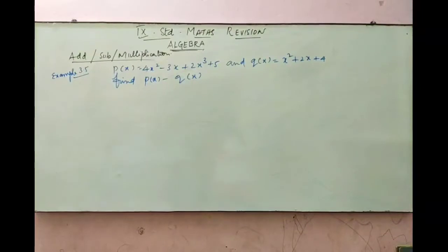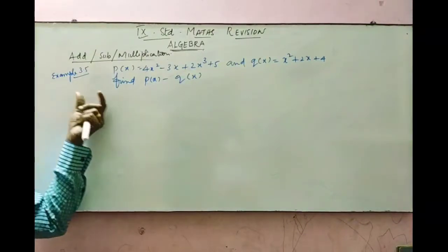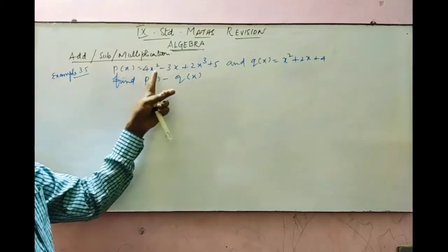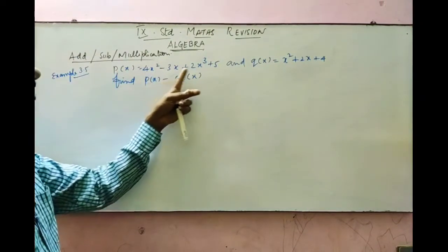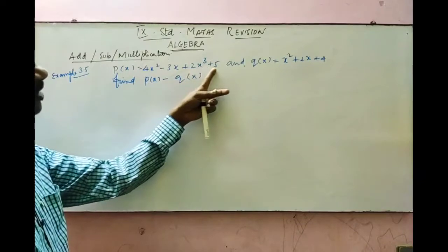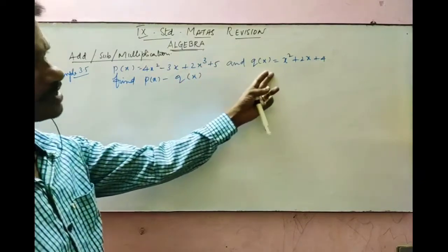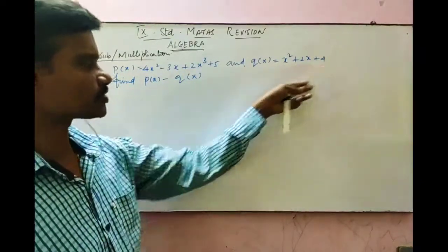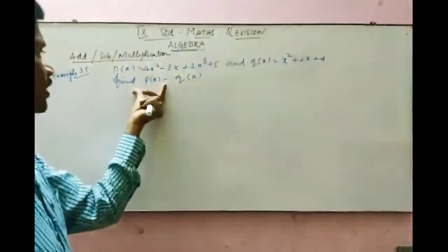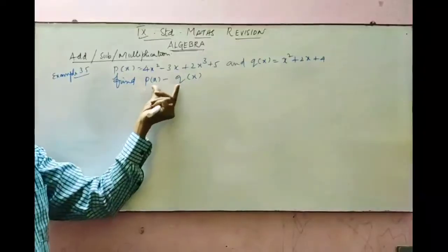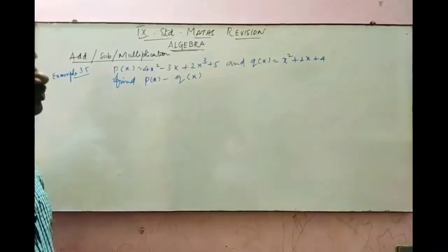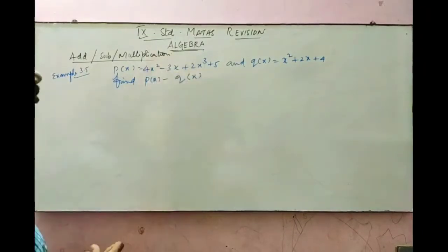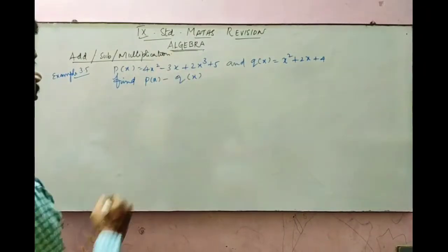Next, example 3.5. In this, P of x is 4x squared minus 3x plus 2x cubed plus 5, and Q of x is x squared plus 2x plus 4, the same as the last sum. We have to find P of x minus Q of x — that is, we have to subtract these two polynomials.